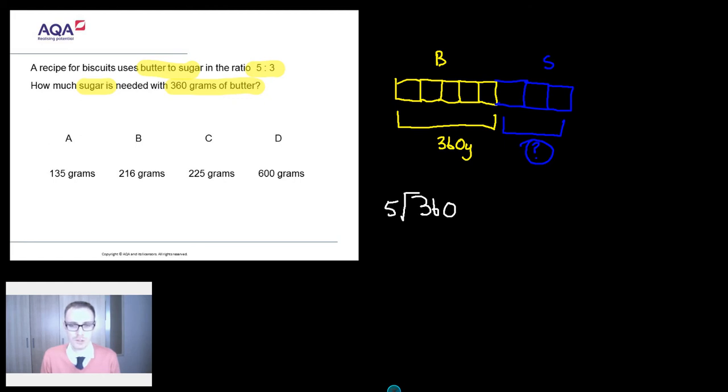Well, I'm never one to pass up an opportunity to do a bit of the old bus stop method. So how many times does 5 go into 3? Well, it doesn't fit in a whole number of times, but I've got a remainder 3. How many times does 5 go into now 36? Well, I think 7 5s are 35. So I've got 1 left over. And how many times does 5 go into 10? 2 times. So I reckon every single one of these bits is 72 grams.